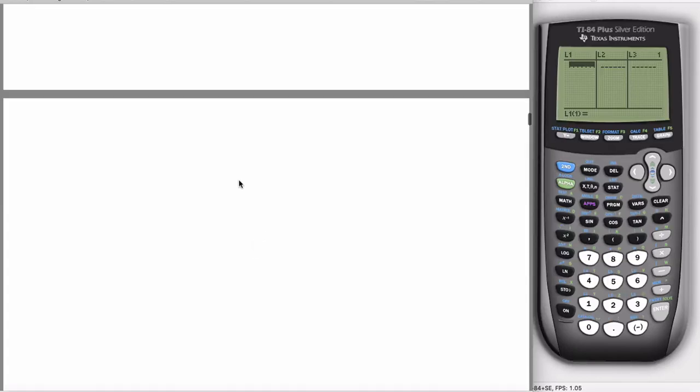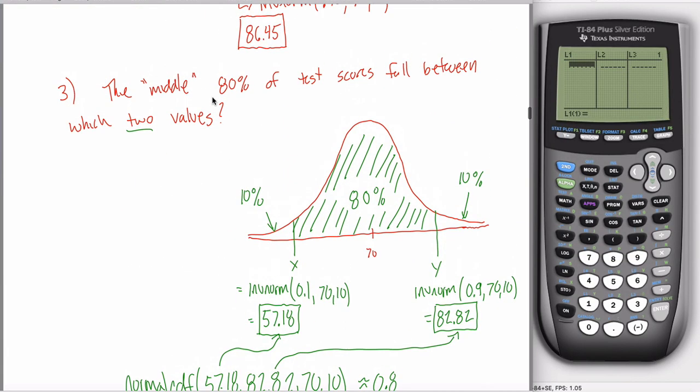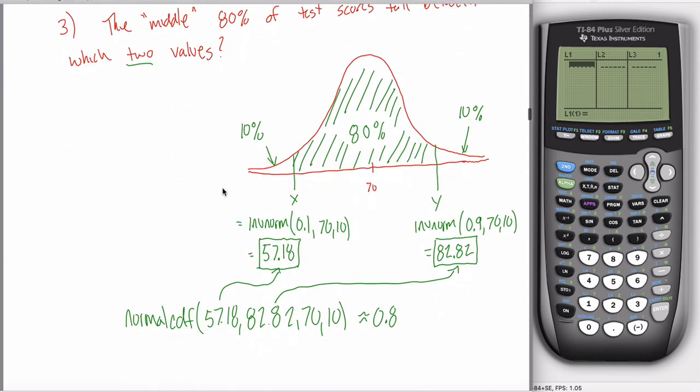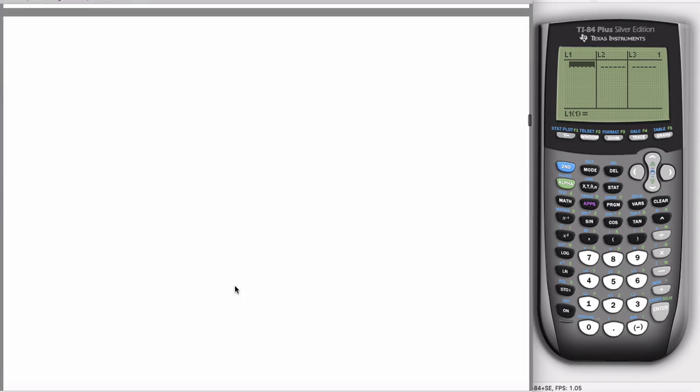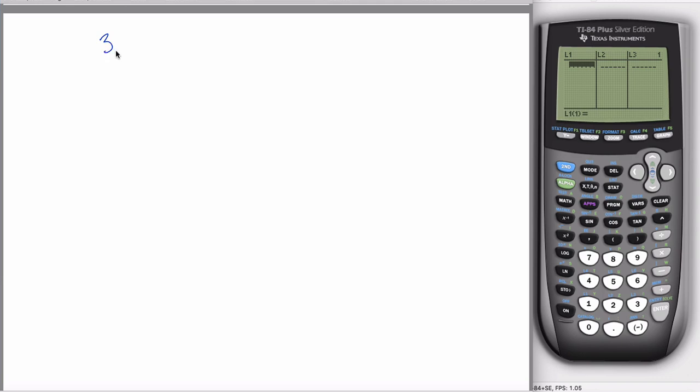All right, so I got some good news for you guys. I think the last few sections talking about 3.1, the empirical rule, these calculator functions, can be kind of intense. It's pretty challenging for students. And I think that in the next chapter, chapter 4, things will be pretty hard as well.